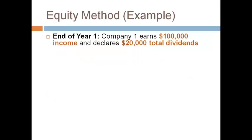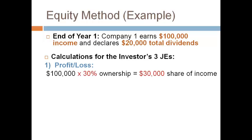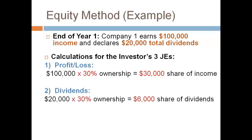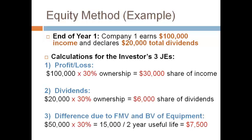The investee earns $100,000 and declares dividends of $20,000. At the end of the first year, the investor must record three journal entries to keep the investment account proportionate to the investee's owner's equity. The first entry records the investor's share of profit or loss. The second records the investor's share of dividends. The third eliminates the difference for one year. Notice that all amounts are multiplied by 30% ownership — do not forget to multiply by the percent ownership.